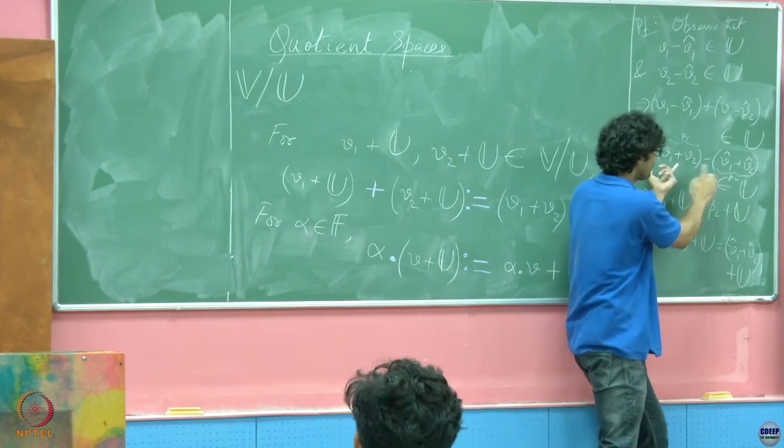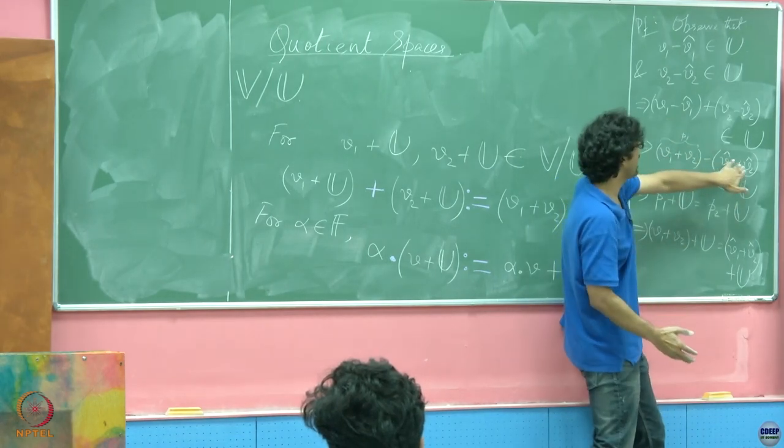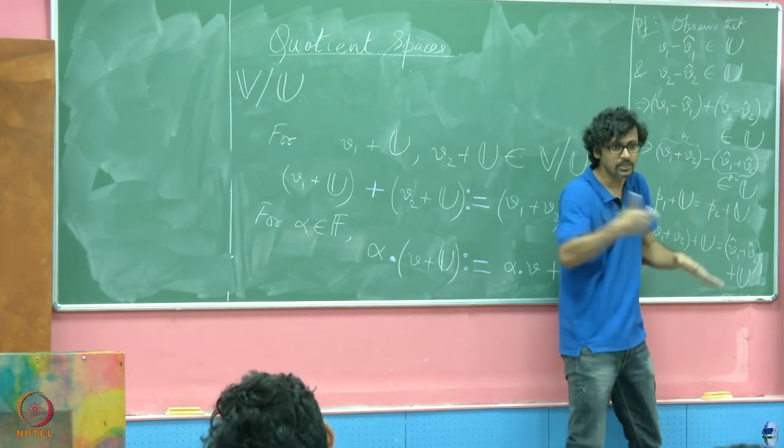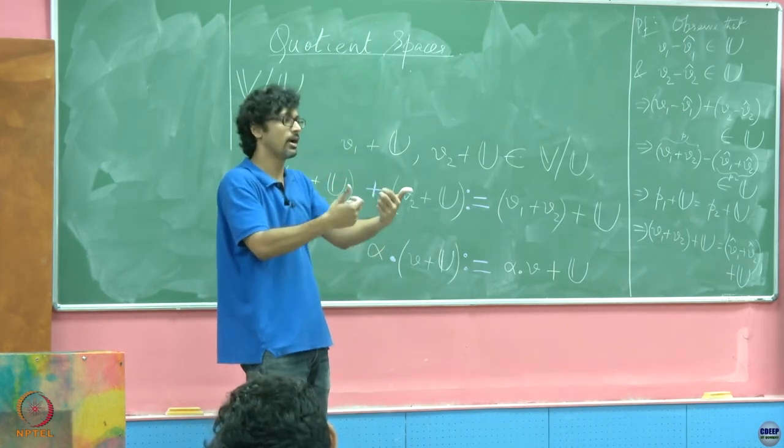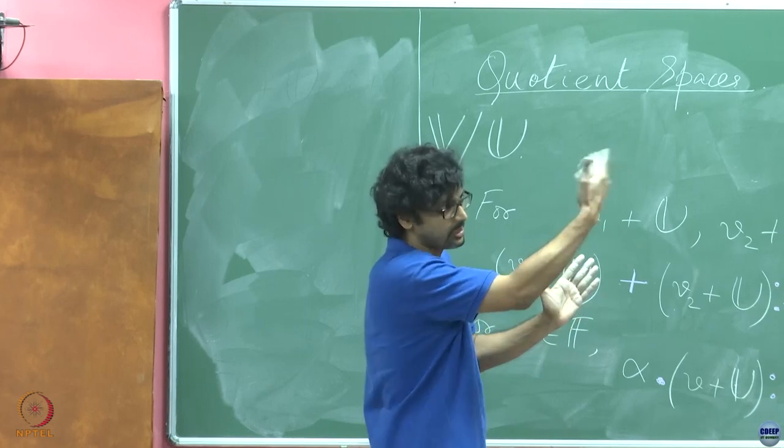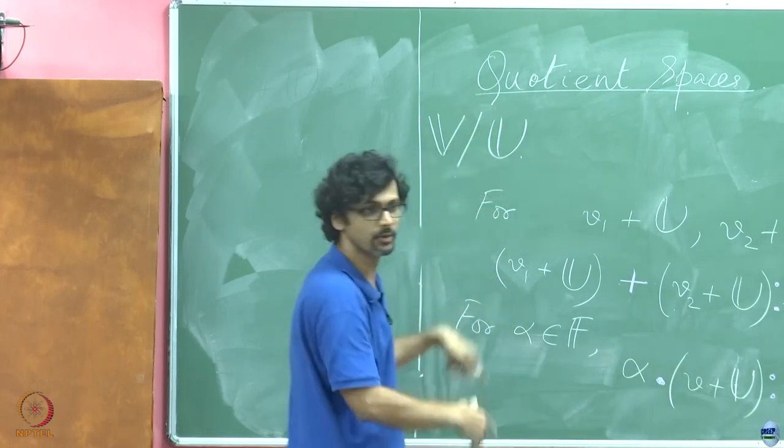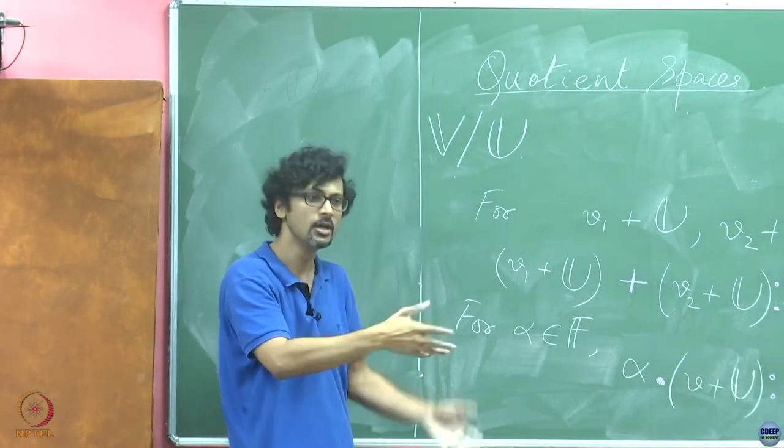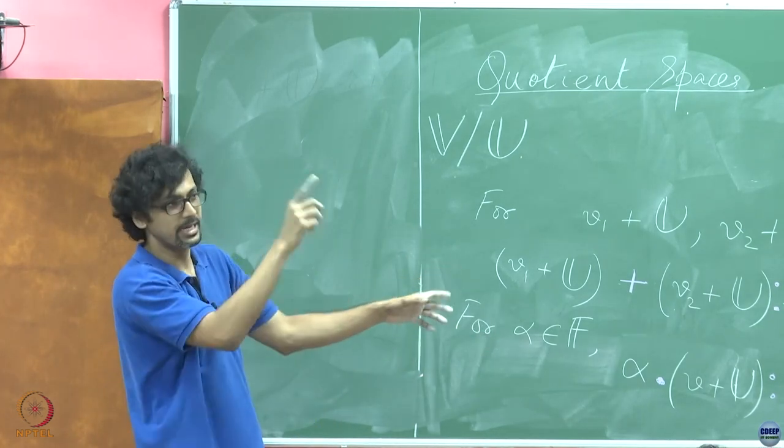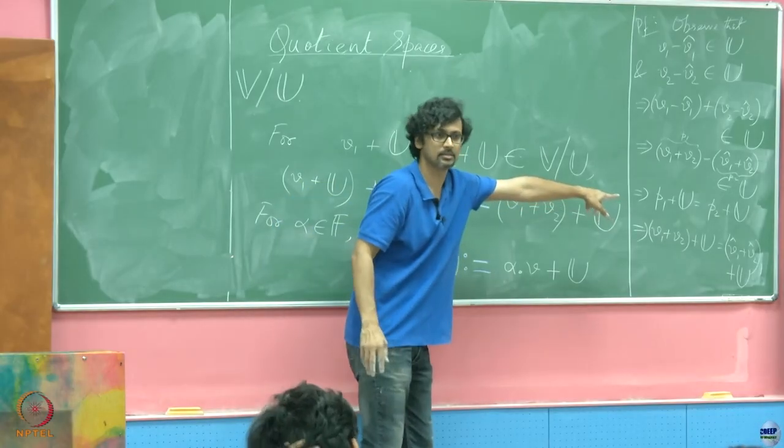Oh, that is what we have just proved, you see this is P1, this is P2. So, whenever P1 minus P2 belongs to a particular subspace, then the affine sets defined by P1 plus U and P2 plus U turn out to be the exact same. That is what we have just proved a while back. Like whenever the difference between 2 vectors lies in the subspace, then by describing it as V plus U and W plus U, you end up with the same identical affine set. That is what we just proved a while back. Those 3 equivalences you remember, one was V minus W belongs to U is the same as V plus U is equal to W plus U, is the same as V plus U intersection W plus U being non-empty. So, by virtue of those we are claiming this.